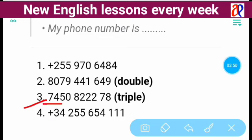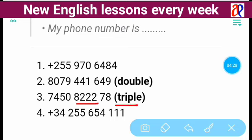Our third example has the phone number seven four five zero eight two two two seven eight. This number contains three consecutive numbers of the same digit — two two two. When a digit appears three times in a row, you use the word 'triple' followed by that number, so two two two becomes 'triple two.' Remember: two same digits in a row is 'double,' three same digits in a row is 'triple.'